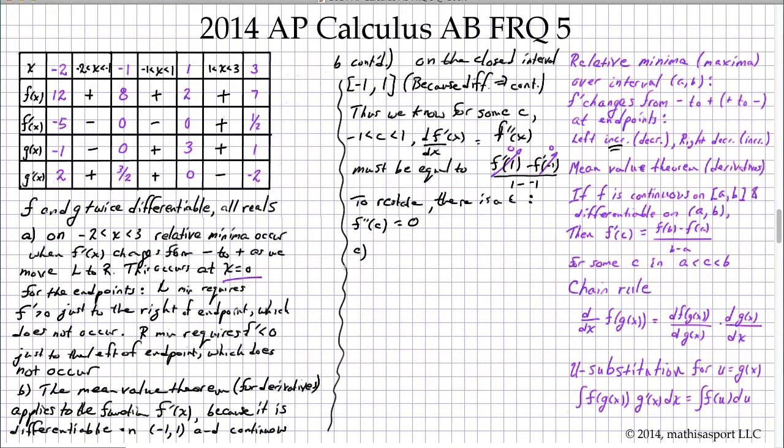Part C. This function that we're given is based on f of x, but it is the logarithm, the natural log of f of x. So h prime of 3 is really just another way of saying d by dx of ln of f of x evaluated at x equals 3.